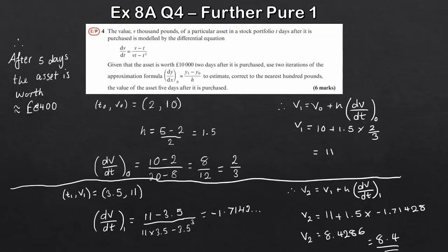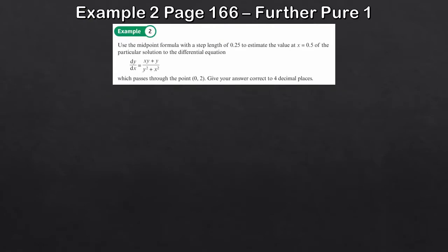That was six marks there. These questions are always long and tedious. Now for the next question I'm using a textbook example. The issue with the midpoint formula questions in the textbook is they all have around four to five iterations, which is very long, so I'm using this example as it only requires two iterations. The method is always pretty similar.